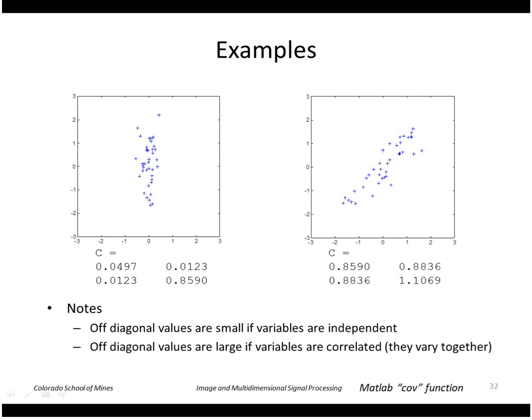Just an example of a two-dimensional set of vectors: here is a covariance matrix of a set of vectors that is more or less independent, so the off diagonal is very little. Here is a set of vectors that are highly correlated, and as you can see the off diagonal elements are fairly large.